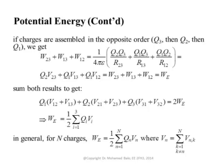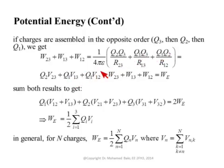We can repeat the same steps in reverse order — first bringing q3 (no cost), then bringing q2 from infinity against the field of q3, then bringing q1 against the field of both q2 and q3. This gives: w23 (energy to bring q2 against q3) plus w13 and w12 (energy to bring q1 against q2 and q3). Each work term is the charge multiplied by the potential. Simplified: w23 equals q2·V23, w13 equals q1·V13, and w12 equals q1·V12.